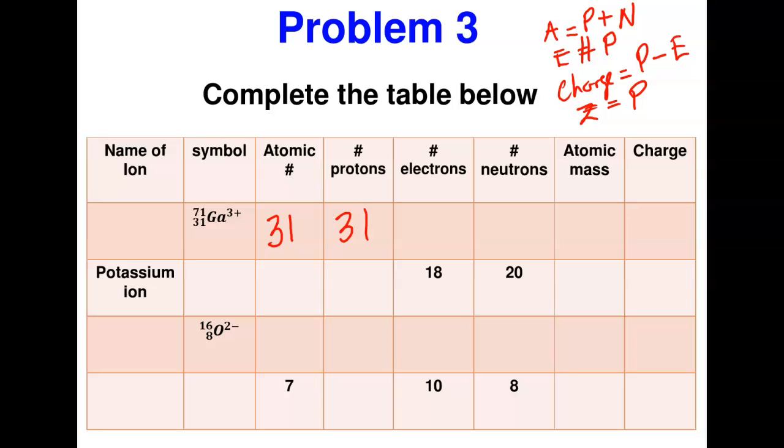First example: gallium Ga³⁺ with atomic mass 71. The atomic number is 31, so the number of protons is 31. To find the number of electrons, we use: electrons = protons − charge. So 31 − 3 = 28 electrons. For the number of neutrons: atomic mass − protons = 71 − 31 = 40 neutrons. The atomic mass is 71 and the charge is 3+.